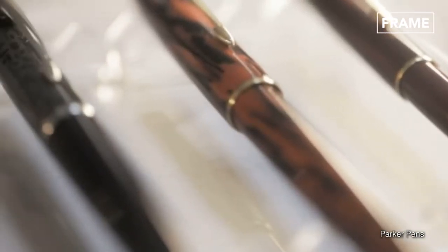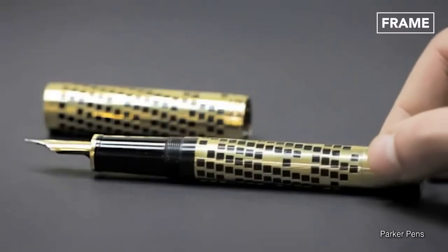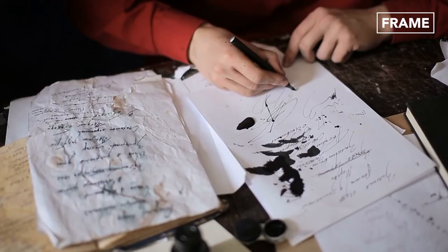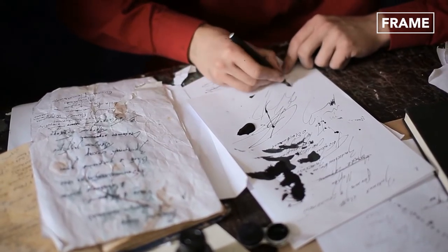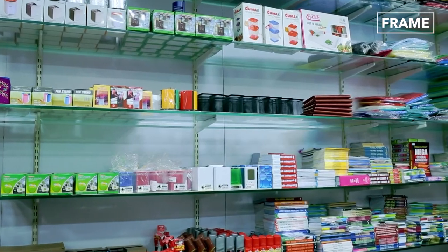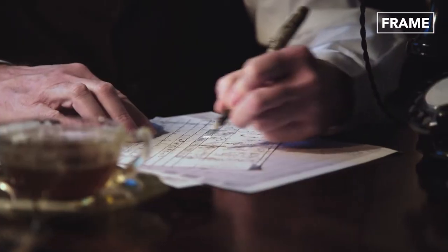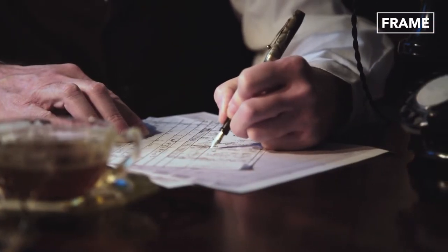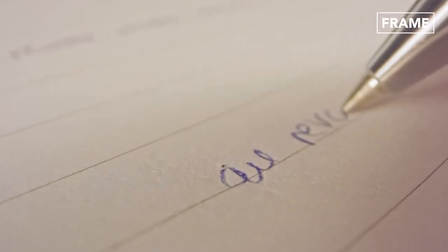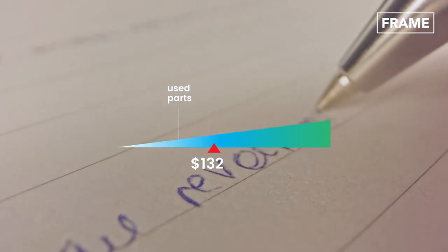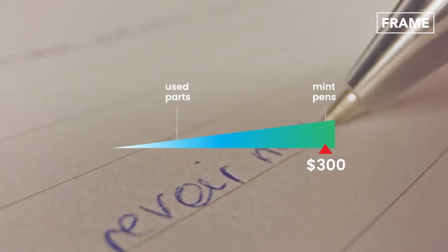Mint pens, which are in the best condition, are generally more expensive than used pens with a good nib. When pens are in bad condition, they can only be used by fountain pen restorers for parts. Their value reduces drastically. The market value of these pens can range from $5 for used parts to $300 for mint pens.